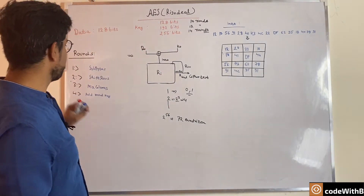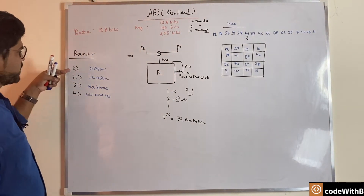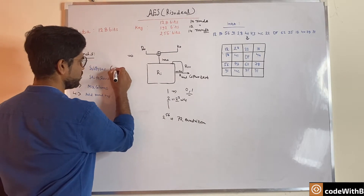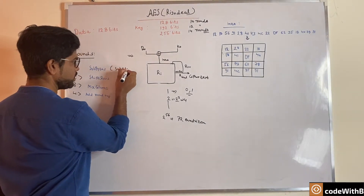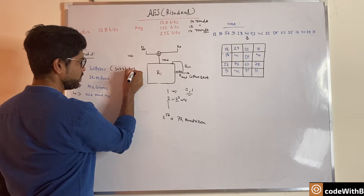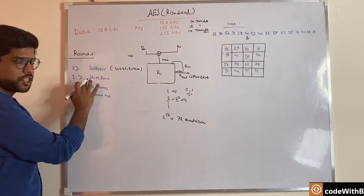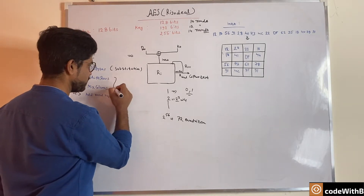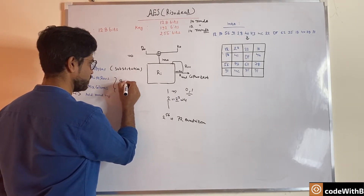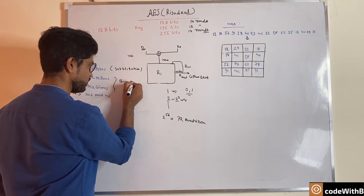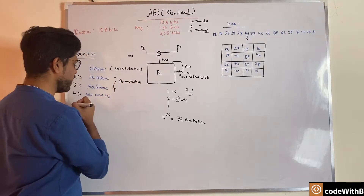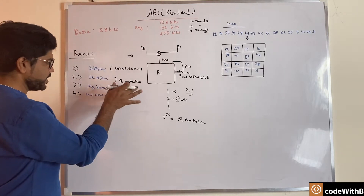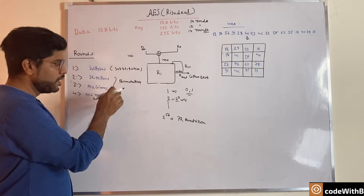In every round we have these steps: the first step is sub-byte, which is substitution; then shift rows and mix column, which is basically permutation; and finally add round key, which combines the result of the current round with the key.